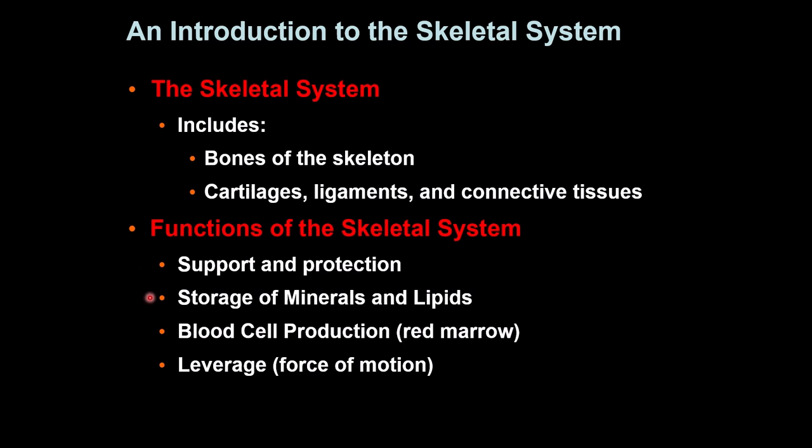The skeletal system stores different minerals — the most important are calcium salts, but there are other ones we will discuss later. As you age, lipids also accumulate inside the bones, so it serves as storage for lipids as well. The bone marrow is the area where blood is formed — not just red blood cells but other blood cells as well — which is an important part of normal body function.